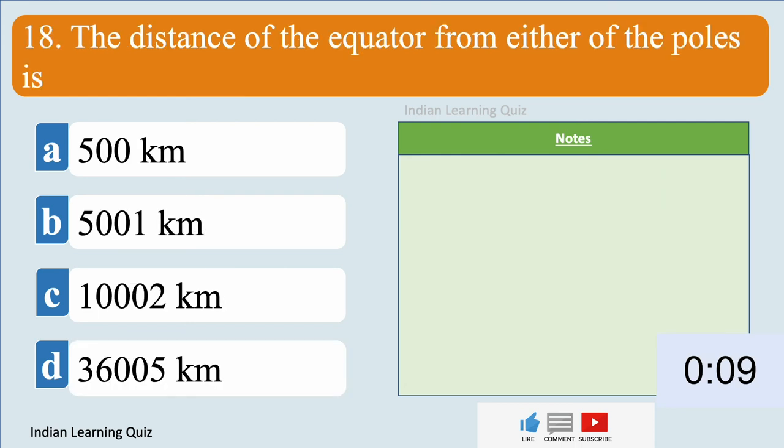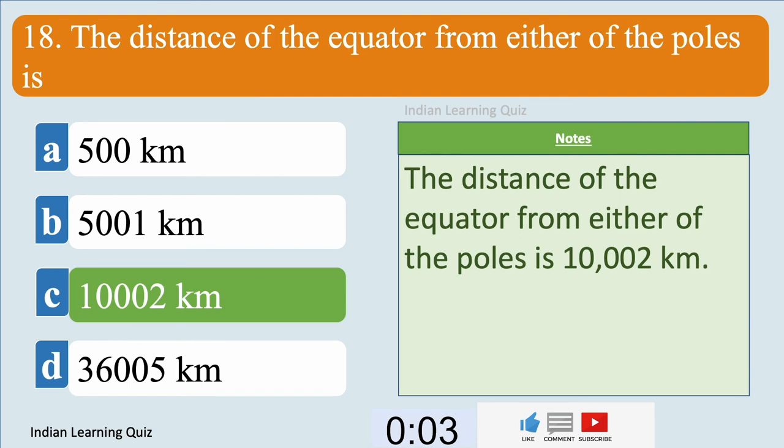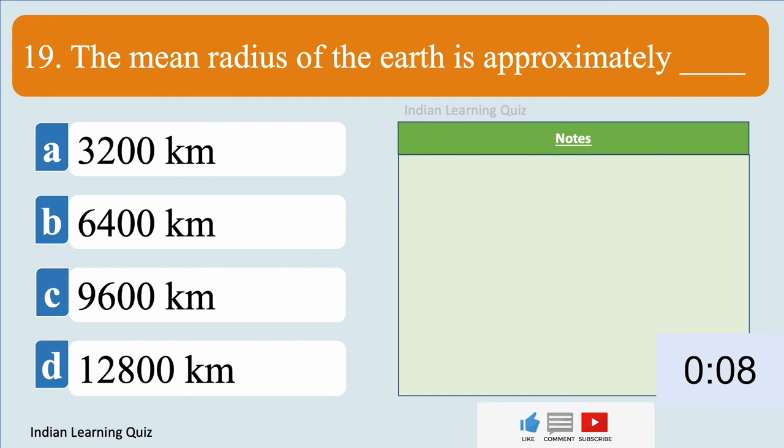The distance of the equator from either of the poles is 10,002 kilometers.